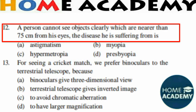Question number 12: A person cannot see objects clearly that are nearer than 75 cm from his eyes. What disease is he suffering from? The answer is hypermetropia, also called farsightedness. In this condition the eyeball is too short, or the lens is too flat or inflexible, so nearby objects do not focus on the retina. Eyeglasses with convex lenses can correct the problem.